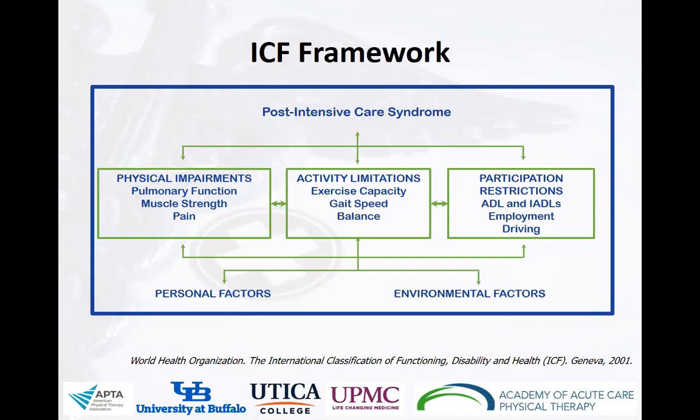With physical impairments, we know that there's a high incidence of pulmonary function problems, reductions in muscle strength, and in a subset of patients, pain. When we think of activity limitations, there's evidence for reduced exercise capacity, slower gait speed, and problems with balance. And in terms of participation restrictions, these individuals have challenges with performing activities of daily living and instrumental activities of daily living, returning to employment, and returning to driving. Complicating the physical problems are their environmental setting and personal factors, including the overlay of mental health problems and cognitive impairments.